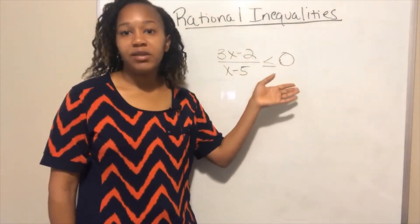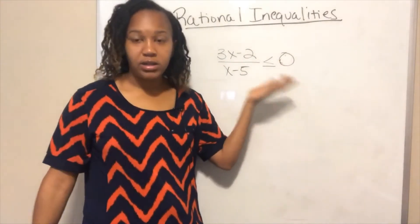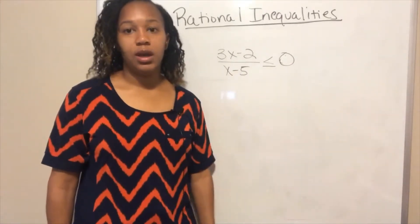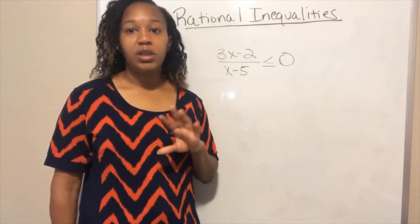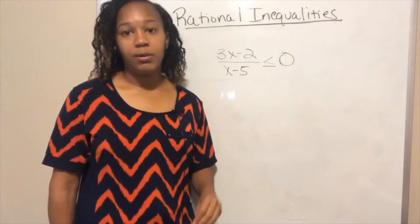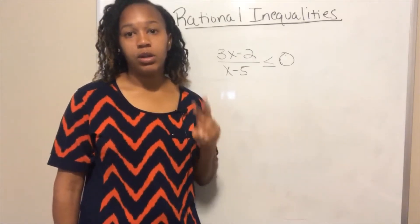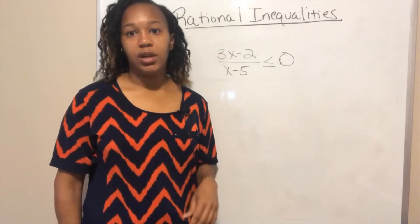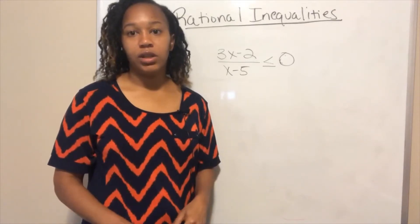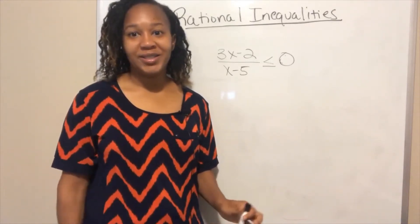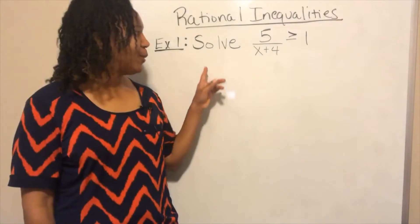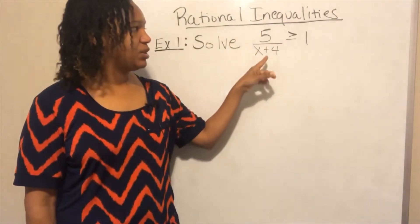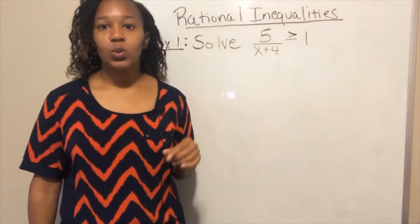Zero doesn't have to be on the other side to start, but we're going to eventually want to get zero on the other side. So instead of listing all of the steps now, I'm going to work two examples and go through step by step. For example one, we want to solve the rational inequality: five over x plus four is greater than or equal to one.